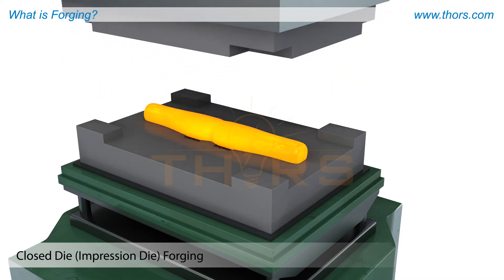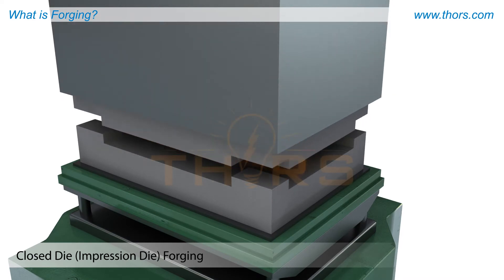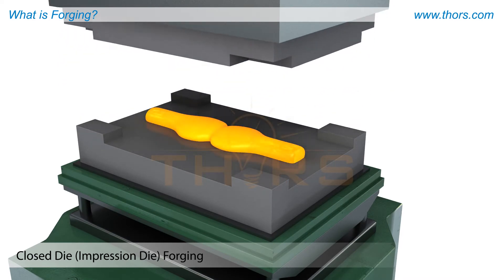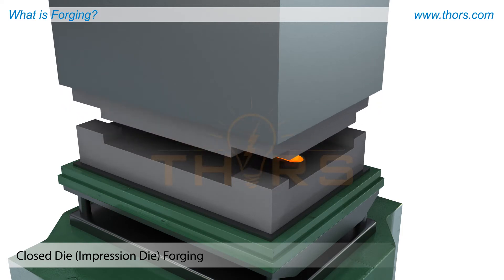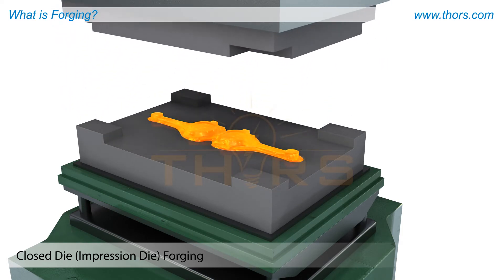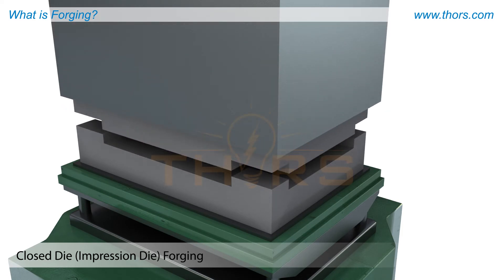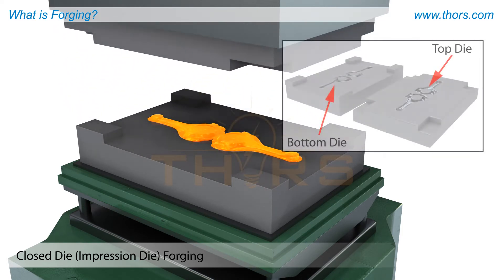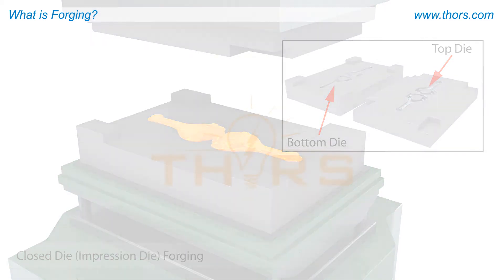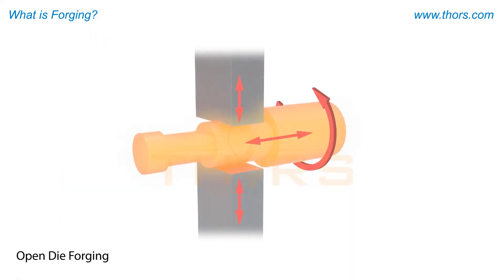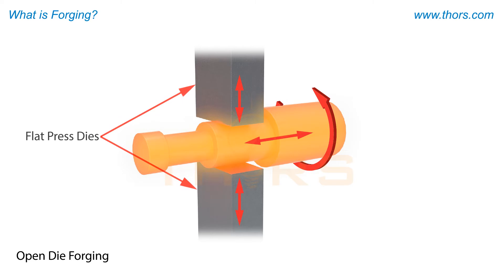Closed die or impression die forging is one of the most common forging processes. In closed die forging, a press forces two halves of a die together to forge a blank in the shape of the die impression.